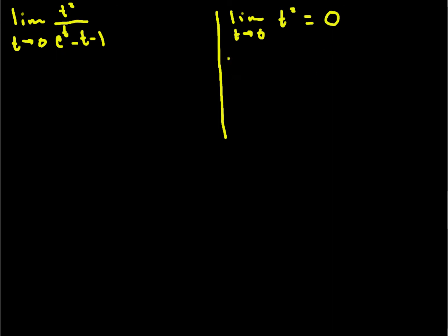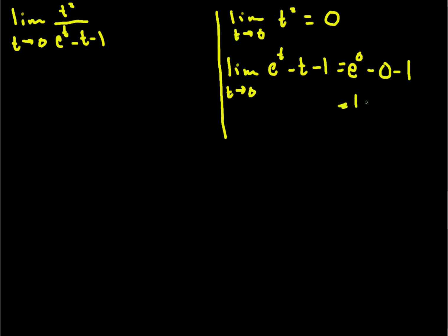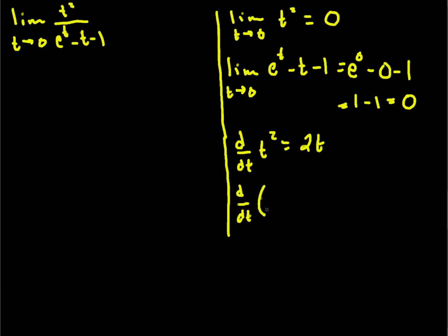First, the limit as t goes to 0 of t squared is 0 — it's a nice continuous function. And for the denominator, e to the t minus t minus 1, this is continuous so I can plug in: e to the 0 minus 0 minus 1. Since e to the 0 is 1, this is 1 minus 1, which is 0. So we've met the requirements of L'Hôpital's rule. The derivative of t squared is 2t. And the derivative of the denominator, e to the t minus t minus 1, is e to the t minus 1.